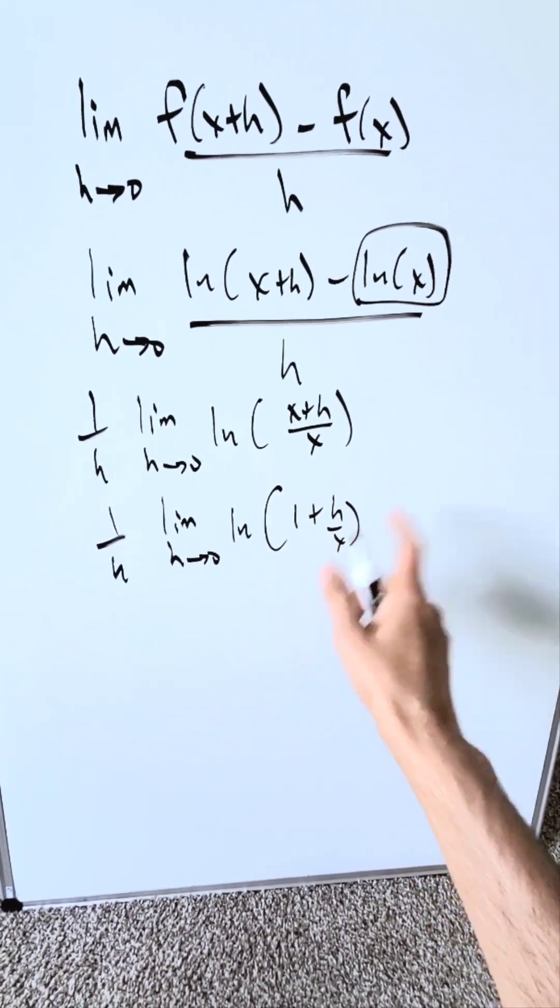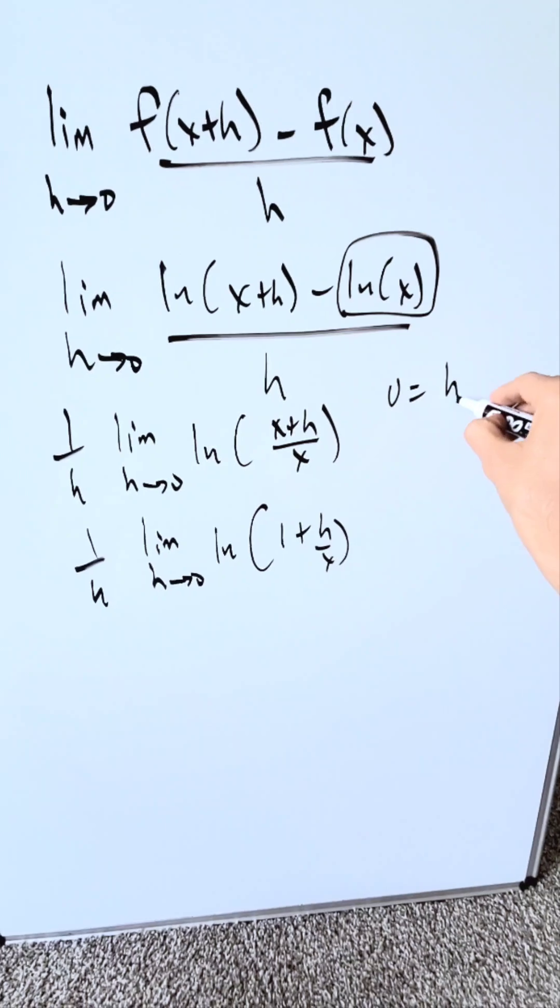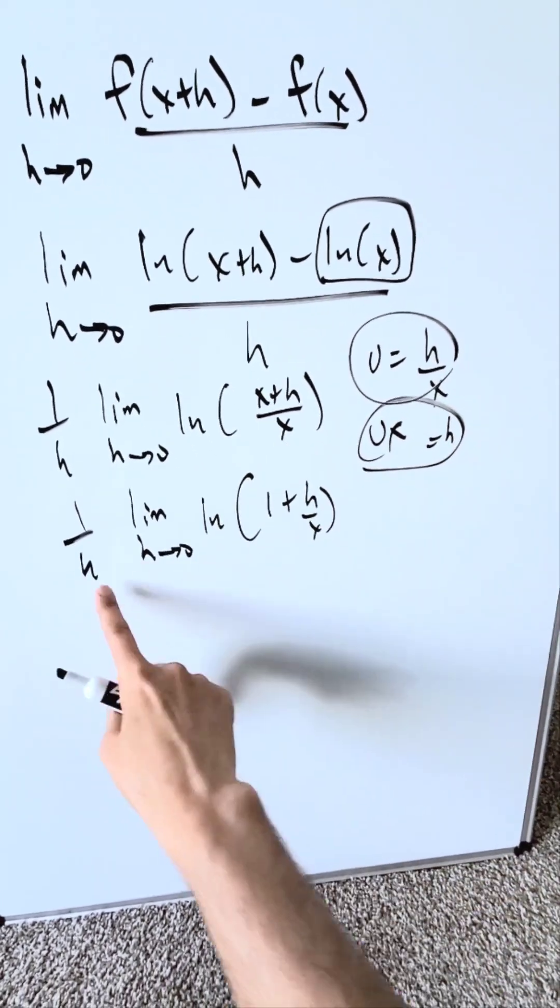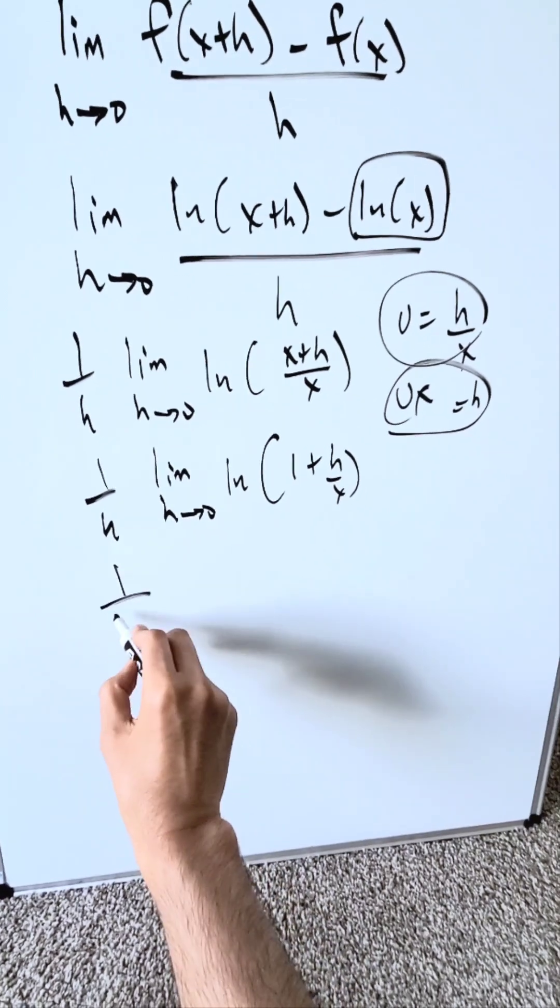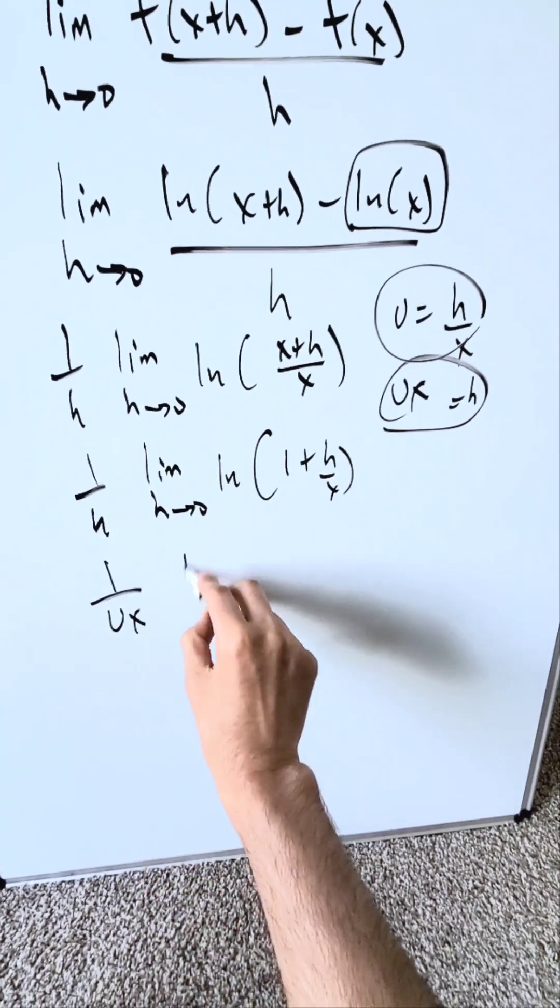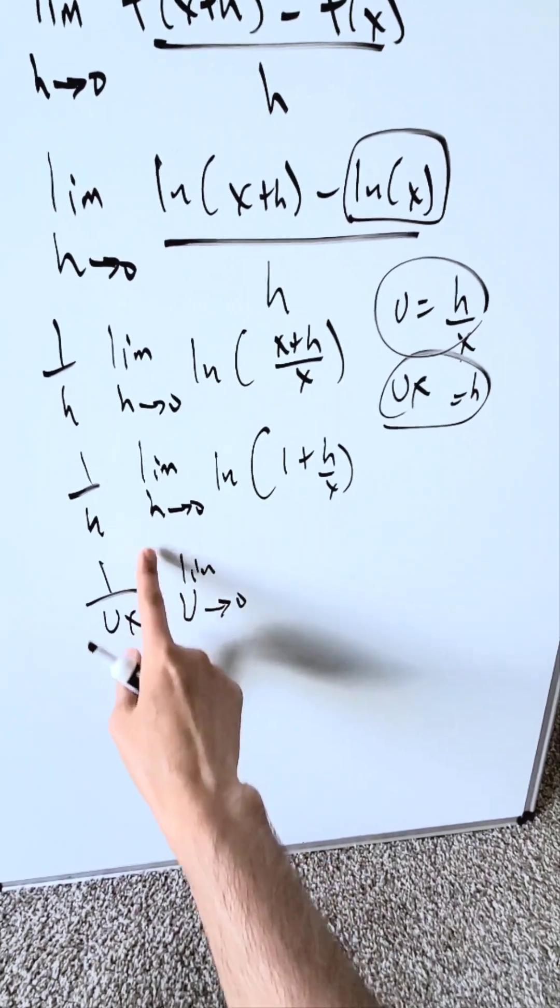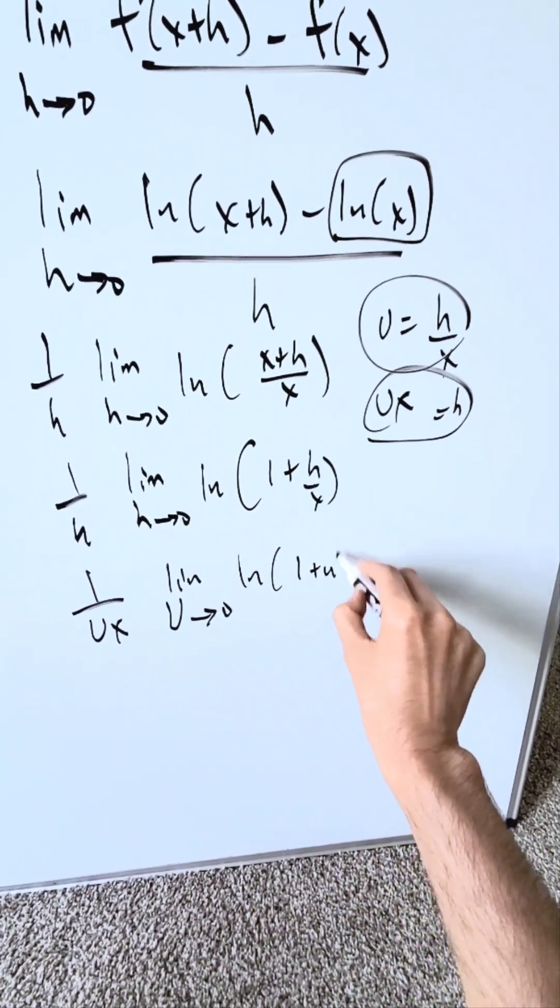A substitution is warranted here. If u is equal to h over x, you know h is equal to u x. These are the substitutions you'll bring right over here and here. I have 1 over u x. I have limit as u now approaches 0 because the substitution h becomes u. We have natural log 1 plus u.